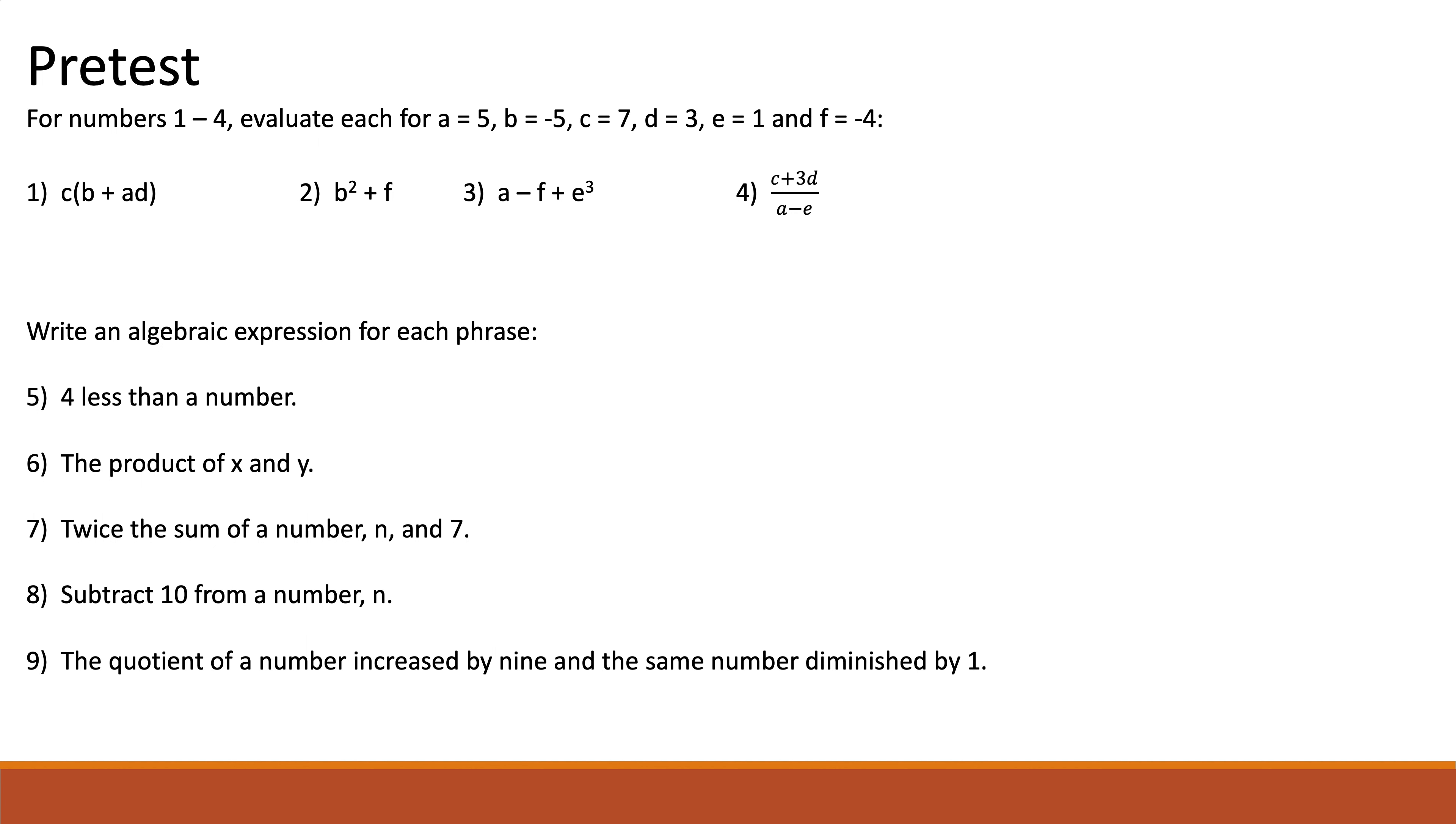I might change c to 3, a to 8, b to negative 7. I don't know whatever I'm going to put in here, but I'll change those values. And then underneath that it says 4 less than a number, I might write 4 more than a number or 8 less than a number or 7 less than a number. Product of x and y I might change to the quotient of x and y or the quotient of a or the product of a and b. So those are the kind of changes I make. Everything else pretty much stays in line. It's like one little tweak to each of these questions and then it's on your test.